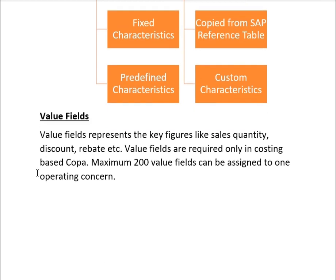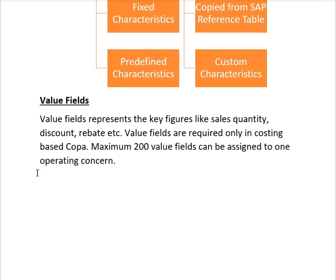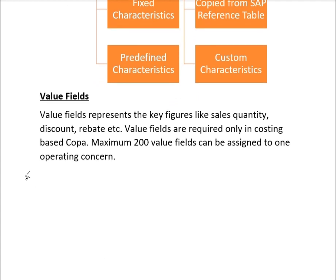Value fields represent key figures such as sale quantity, discount, and rebate. Value fields are required only in costing-based COPA, and a maximum of 200 value fields can be assigned to one operating concern. Value fields are classified into two types: quantity-based and amount-based. In the next sessions, we will also define our own custom value fields.